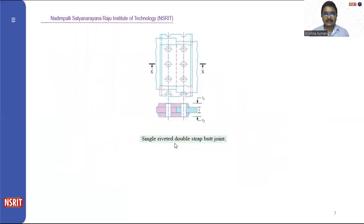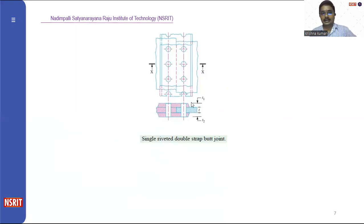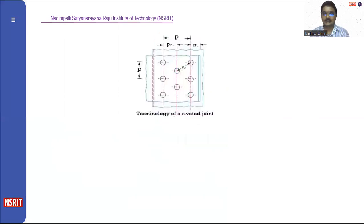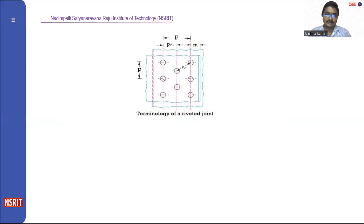Next you can see another condition called single riveted double strap butt joint. Multiple plates are present, a butt joint is incorporated, and we also have a double strap mechanism. The terminology shown here represents the center diameter and center axis of the hole between the two holes, from the center axis to the plate, the distance between the two holes, and the distance between the side of the rivet.